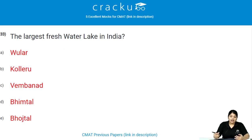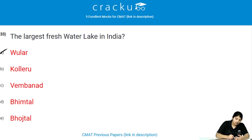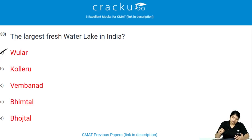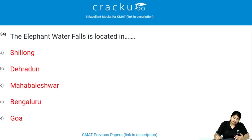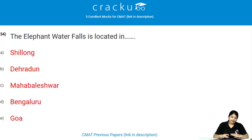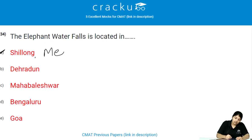The largest freshwater lake in India is Wular Lake, located in Bandipur district of Jammu and Kashmir. The Elephant Waterfalls is located in Shillong, Meghalaya.